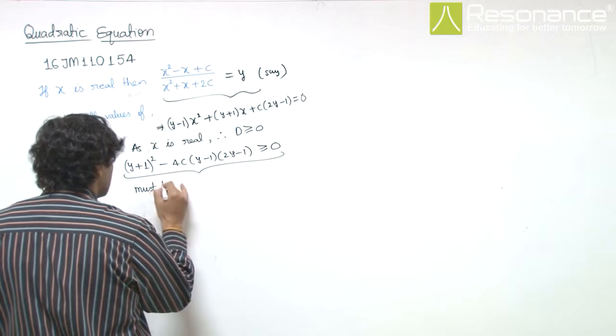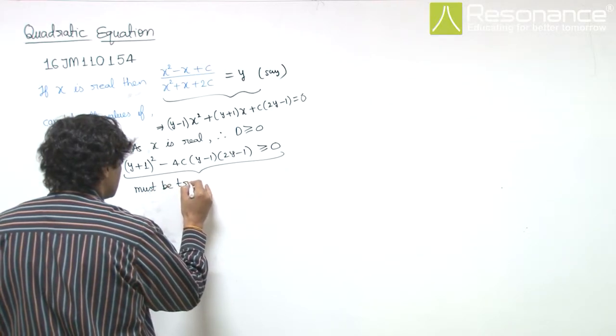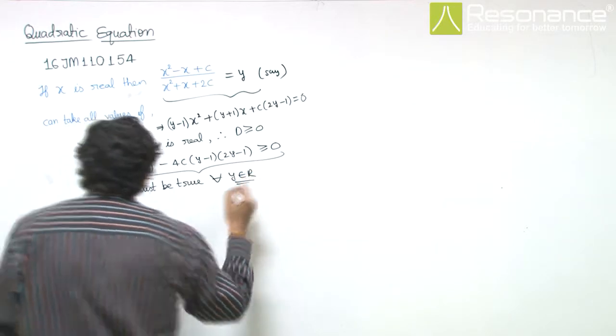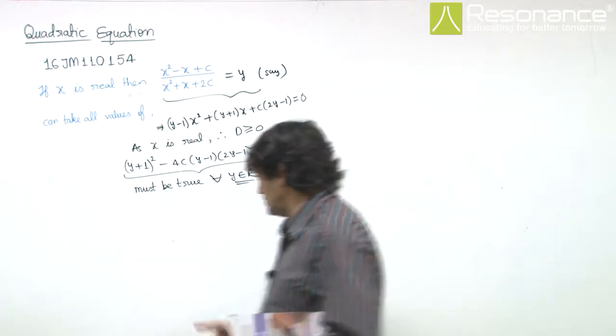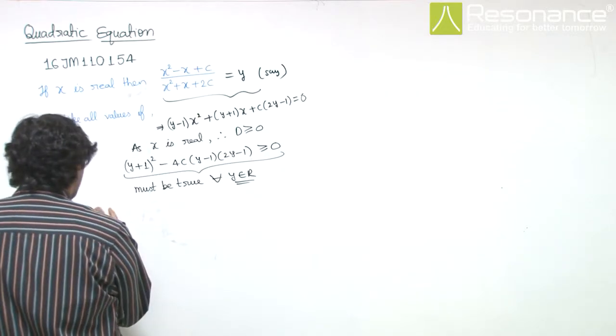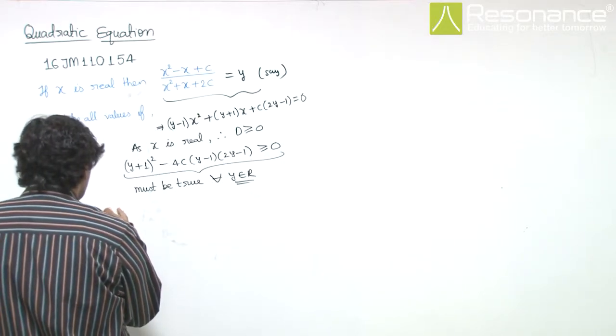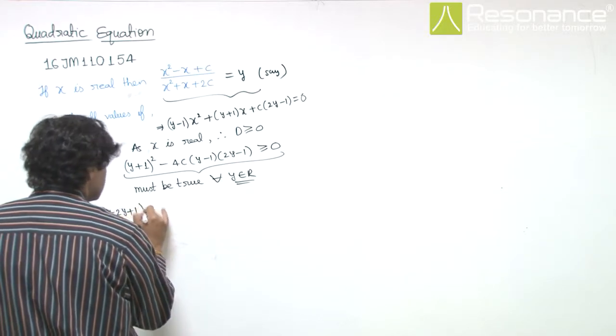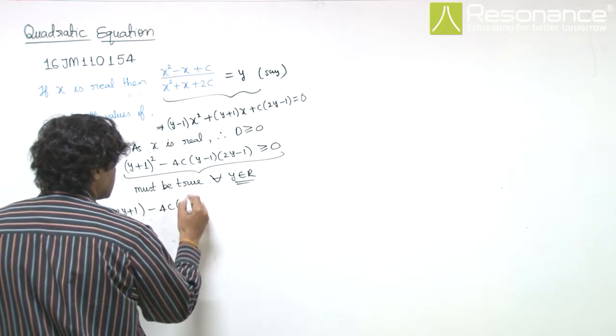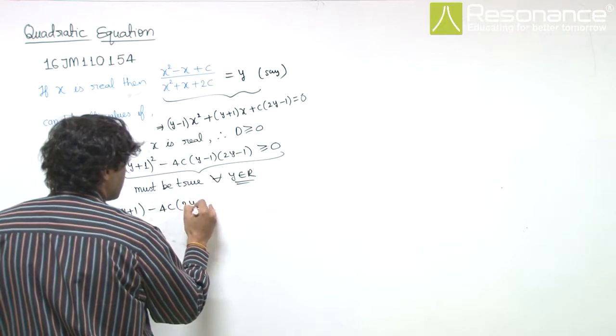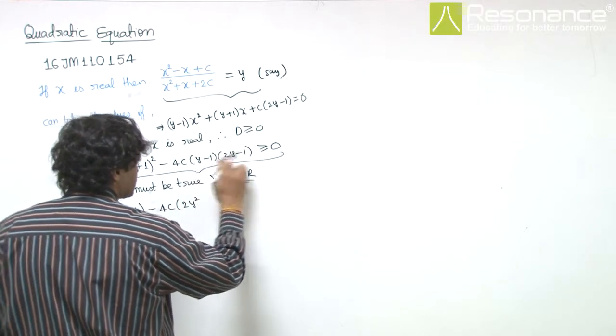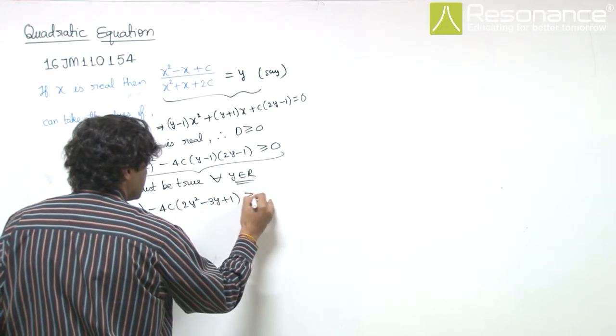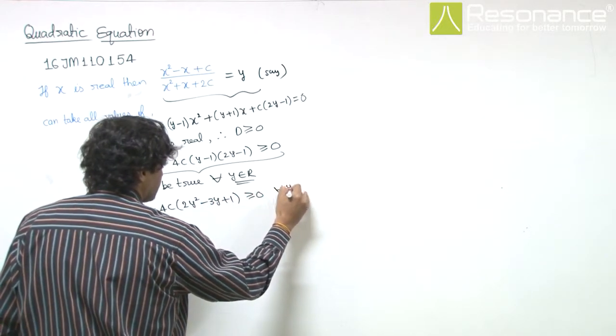So, this must be true for all y belonging to R. This will become y square plus 2y plus 1, and this is 2y square minus y minus 2y, that is minus 3y plus 1, greater equal to 0 for all y belongs to R.